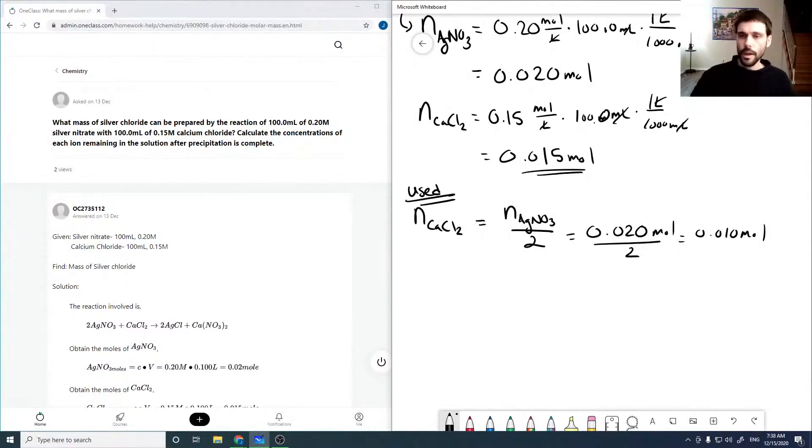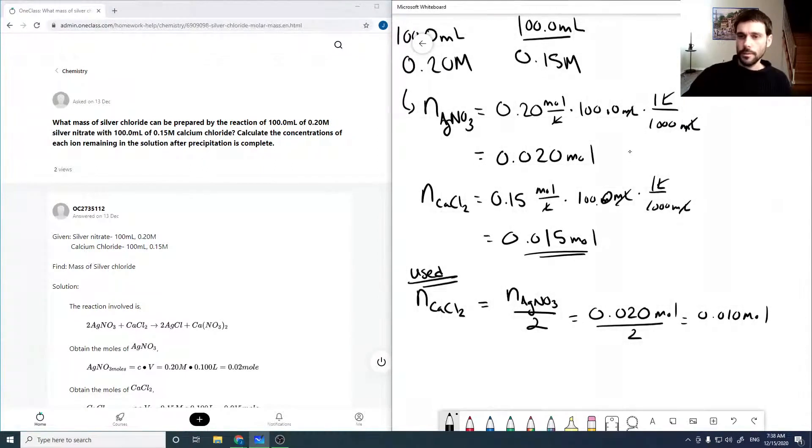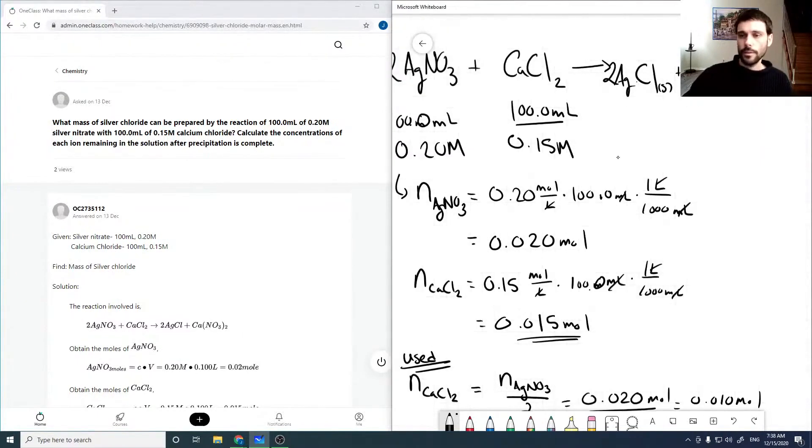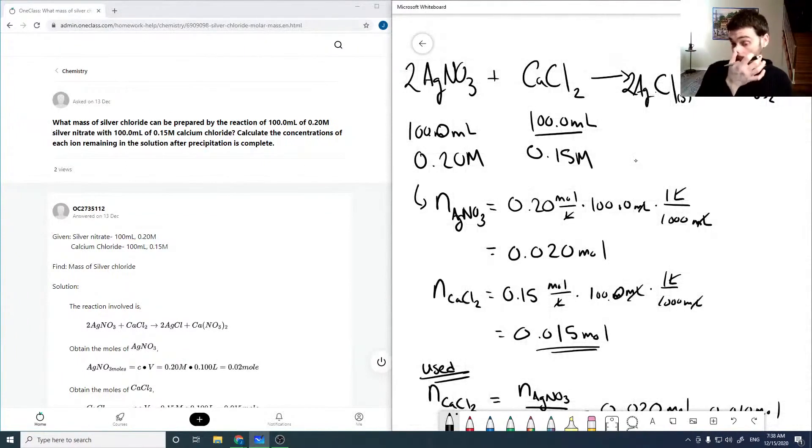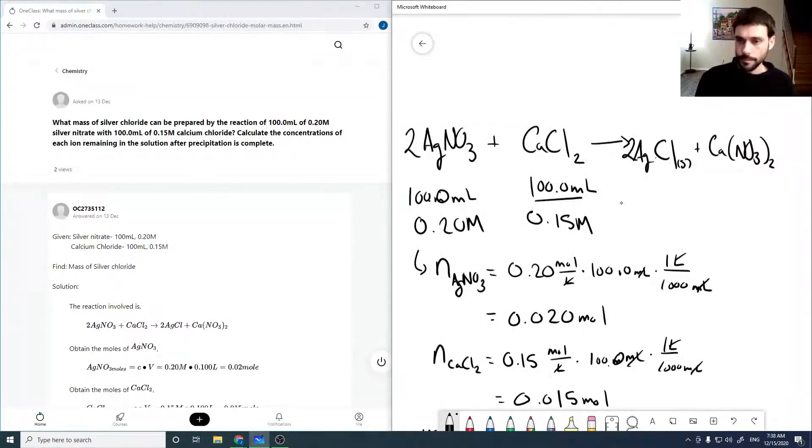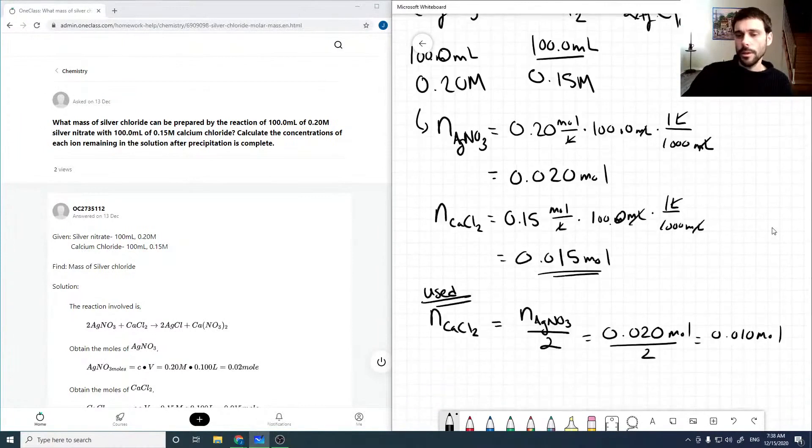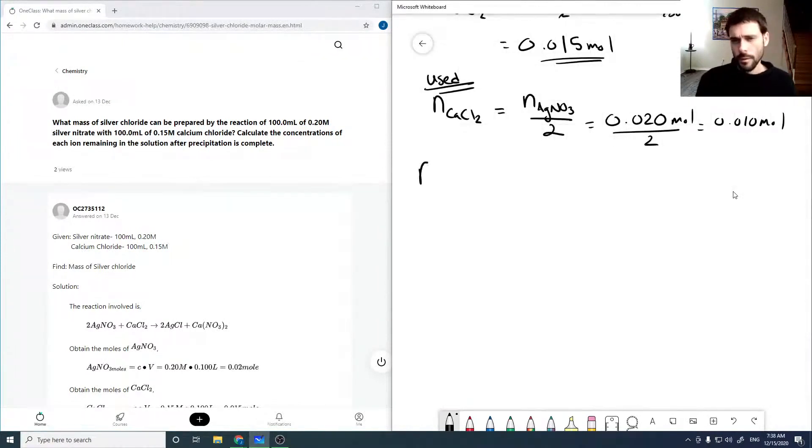Now that we've figured out which one will actually give us useful products, we can figure out how much silver chloride is remaining. So since silver nitrate is being used in its entirety, and if we look at the equation here, these two are at a one-to-one ratio. So that means the number of moles of AgCl is equal to the number of moles of AgNO3, which is equal to 0.020 moles.